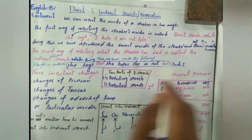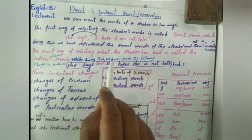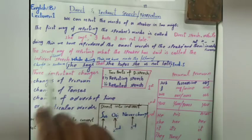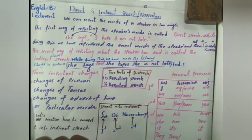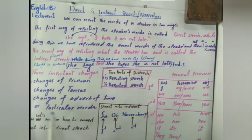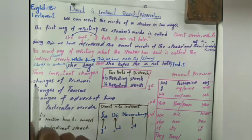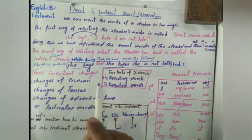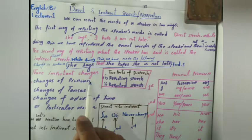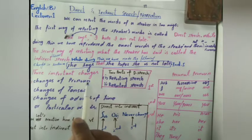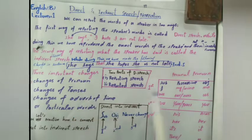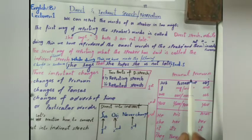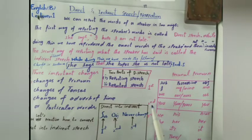The same way of reporting what the speaker has said is called indirect speech. While doing this, we make the following changes in sentences: changes of tenses, changes of adverb of time, or particular words. Today we will learn how to change the pronouns when we convert a direct sentence into an indirect sentence. To change the pronouns, we have a table called personal pronouns.